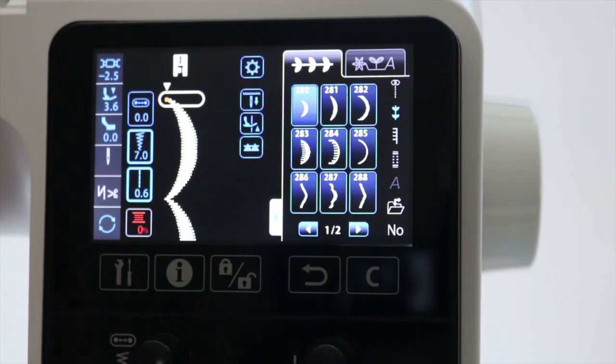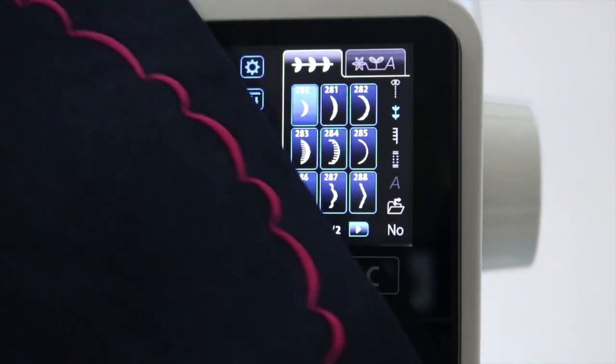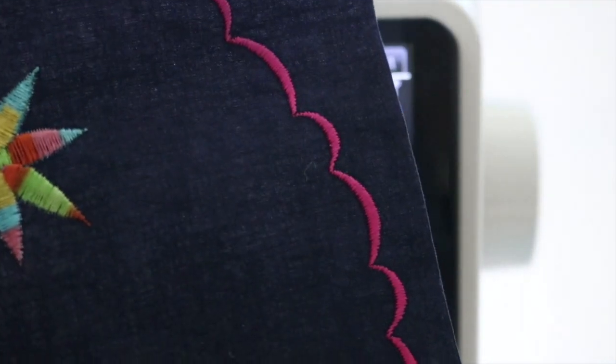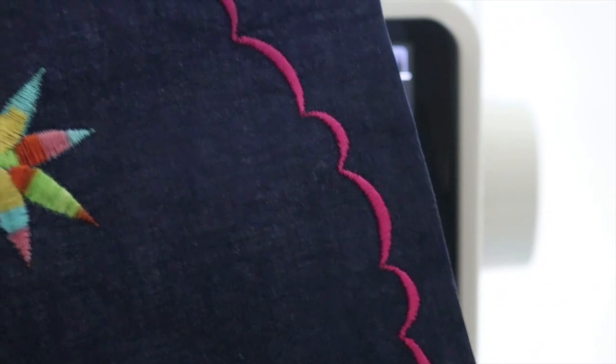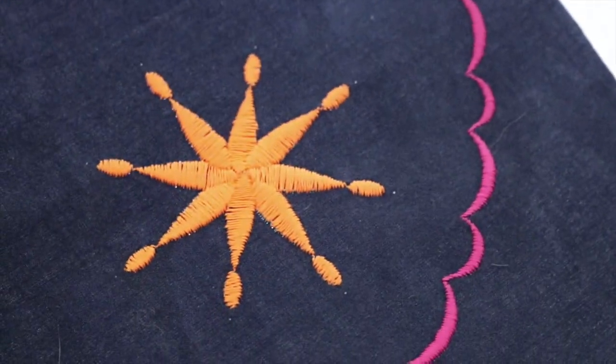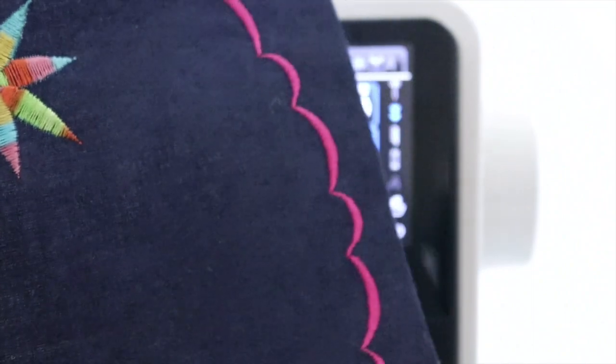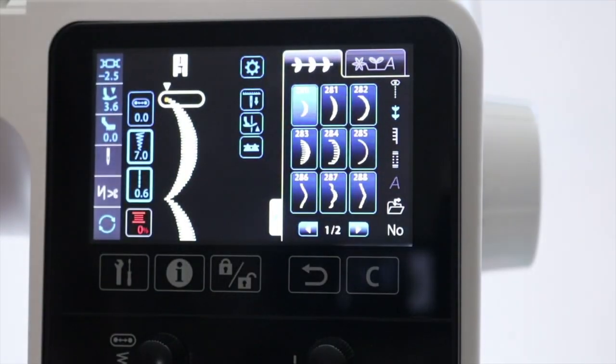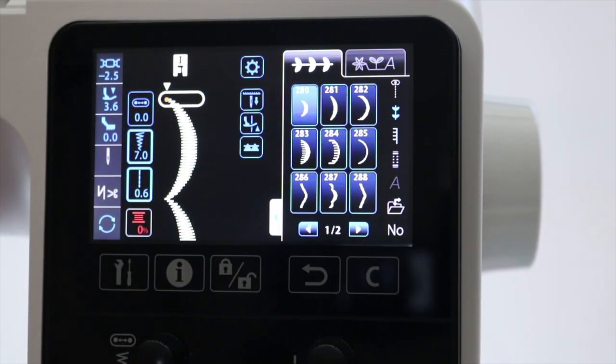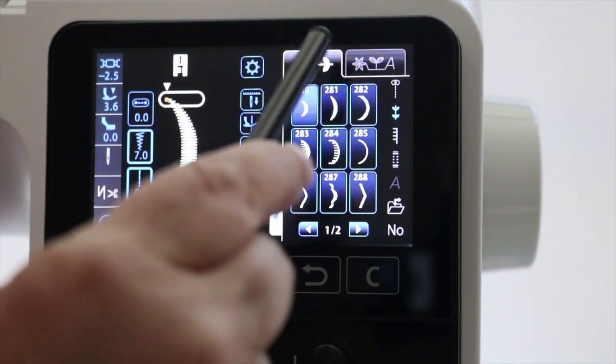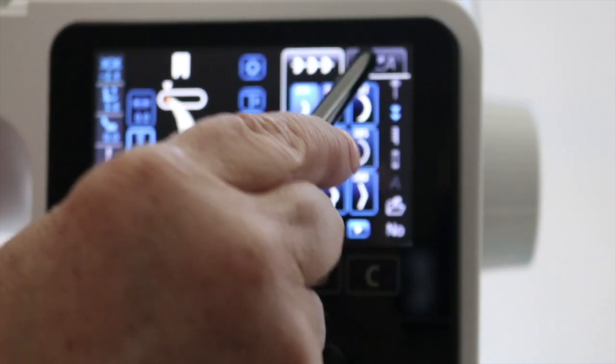But what if I want to do a pattern where I can combine stitches, such as something like this where I have a long scallop and then a short scallop combined. The feature on this machine that allows you to do that is our combination mode where we can program stitches into the memory of the machine. At the top of the screen we can touch our combination mode.